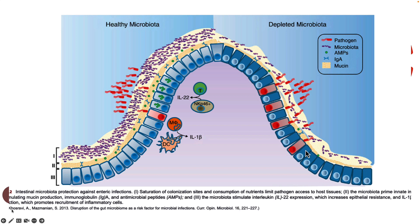When we look at the right-hand side of the image and see a disruption or dysbiosis of the microbiome, pathogens are more allowed to get in, cells are now being infected, you have far less IgA being produced to protect, and far fewer antimicrobial peptides. So dysbiosis of the microbiome is a really dangerous condition.